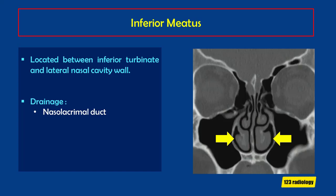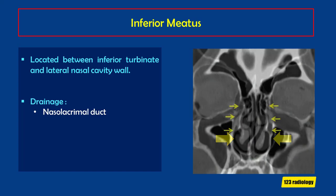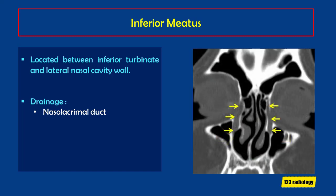The inferior meatus is found between the inferior turbinate and lateral nasal cavity wall. We can appreciate it well on coronal images. It receives drainage from the nasolacrimal duct.